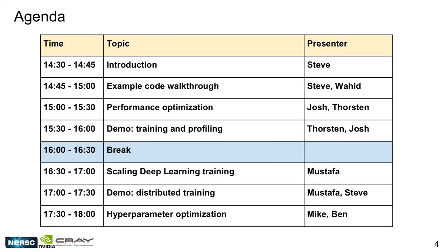This is the agenda for today. We're in the introduction right now. After this, we'll go through a live example code walkthrough on the PyTorch model and training code. Then the NVIDIA team will talk about performance optimization and profiling, followed by a live demo of profiling tools. After a break, Mustafa will cover best practices for scaling deep learning, followed by another live demo of distributed training. We'll finish with Mike's talk on hyperparameter optimization using the CrayHPO tool.